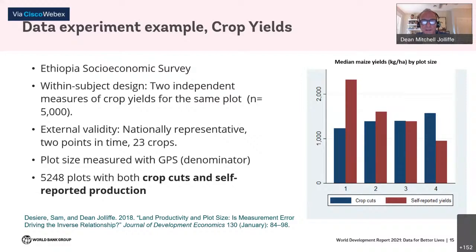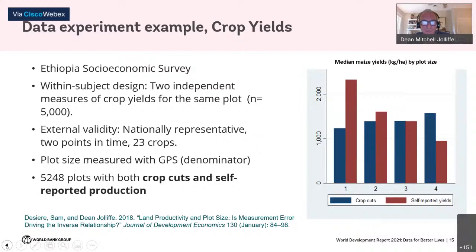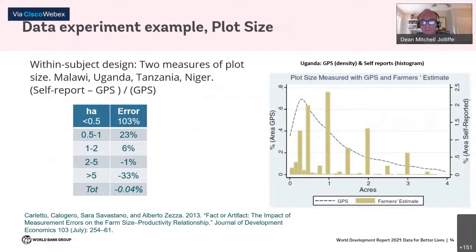Here's an example where testing of plot size measurement was integrated into farm household surveys in Malawi, Uganda, Tanzania, and Niger. For the majority of poor people in the world, using land for farming is central to well-being — how much land they cultivate and how productive it is are key factors. In many cases these basic measures are based on farmers' recall. With the advent of affordable handheld GPS devices, a new way to more effectively capture plot size emerged, potentially showing biases resulting from self-reports. Many plots were measured with both farmer self-report and GPS device.